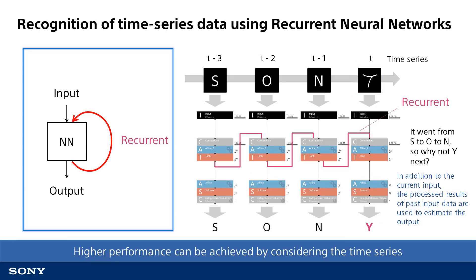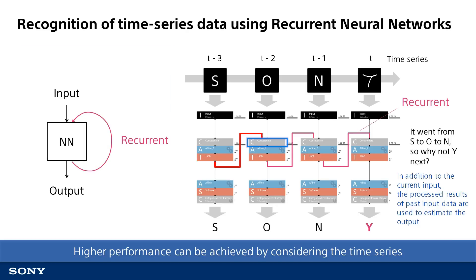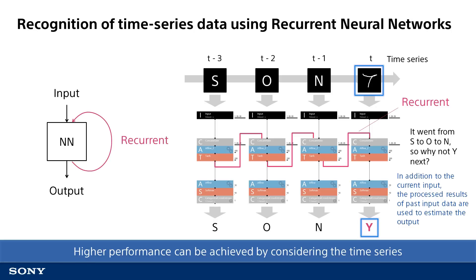In contrast, RNNs use a feedback loop to feed the output from the previous time step in the sequence as part of the input for the current time step. For example, the output of the previous time step is combined with the current time step input via concatenation to be used downstream in the neural network. Having feedback like this enables neural networks to use information about what data has been input in previous recognition processes. In this example, the information that the letters S, O, and N were input before starting the process to recognize the final letter is used so that the neural network can correctly recognize this final character as a Y.